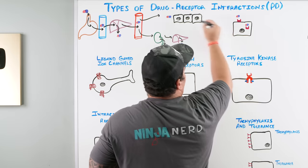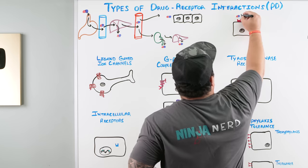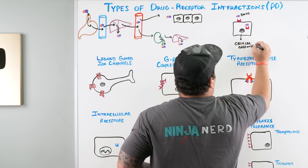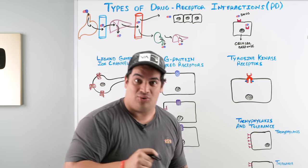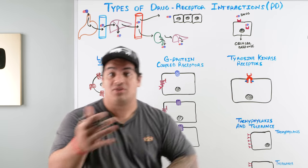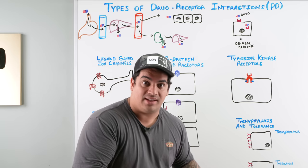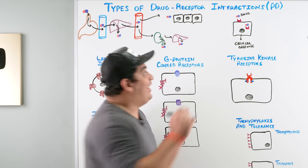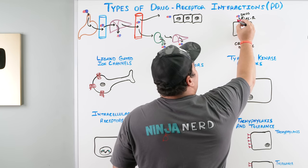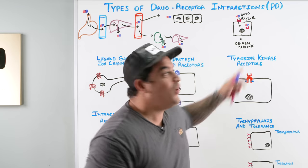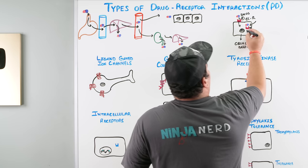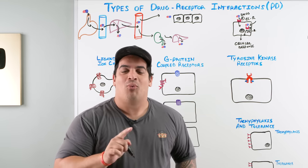When we zoom in on a drug interacting with a cell, the drug needs to act on a receptor. Once it binds to that receptor, it produces a cascade of events intracellularly — activating or inhibiting the cell to produce the appropriate cellular response. Drugs can either bind to an extracellular receptor and work through second messenger systems, or move into the cell and bind to an intracellular receptor.